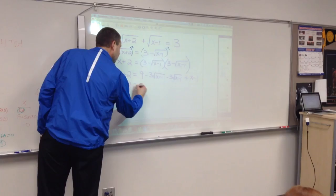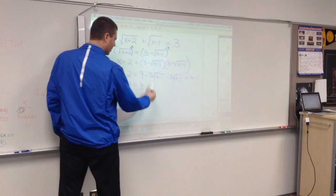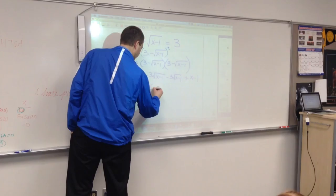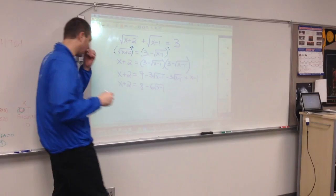Let's kind of combine all of our like terms. So, x plus 2 equals, I got a 9 take away a 1, so I got an 8, minus 3 square roots of these things minus another 3 square roots of those things makes minus 6 square roots of those things, and then plus x.